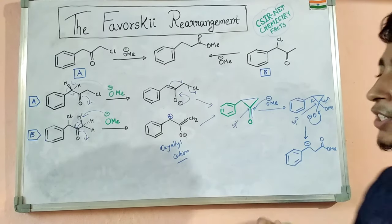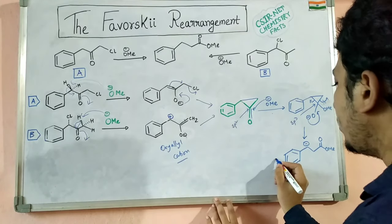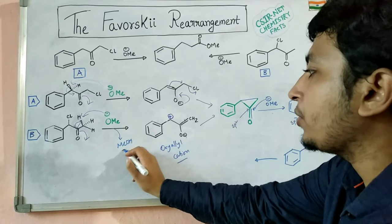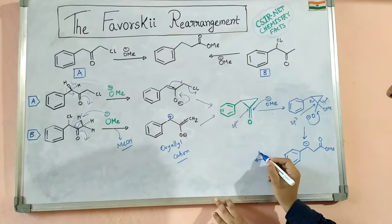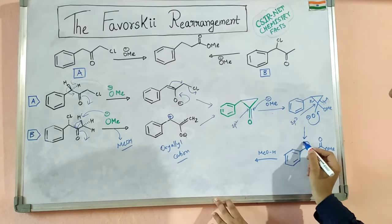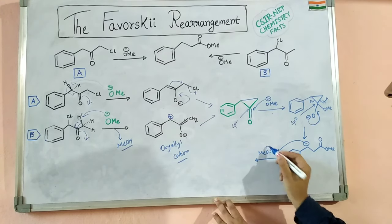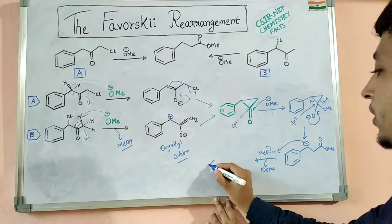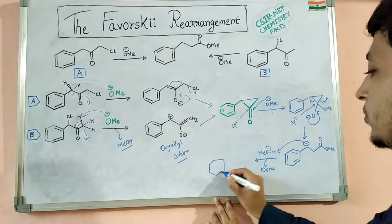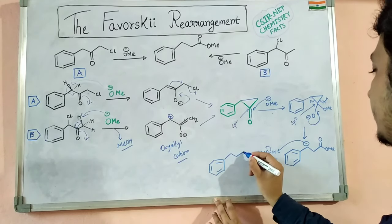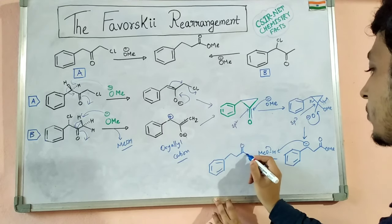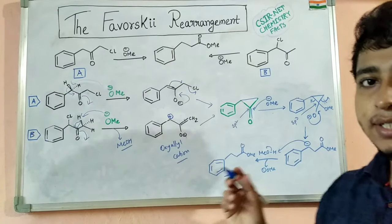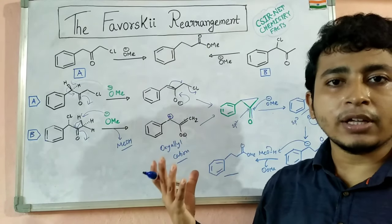This negative charge will search for a proton. In the solution, a methanol molecule is present, and this methanol will donate a proton to the carbanion while the OMe⁻ goes back into solution. This is the structure of the final product. So now we understand the mechanism of the Favorskii Rearrangement. Now we will go through further examples.